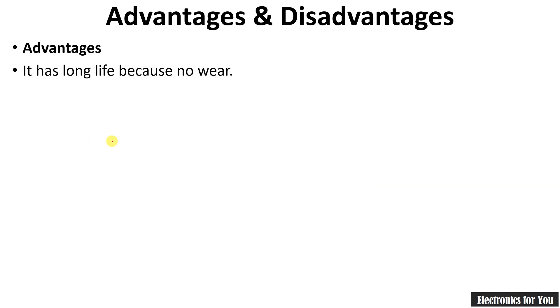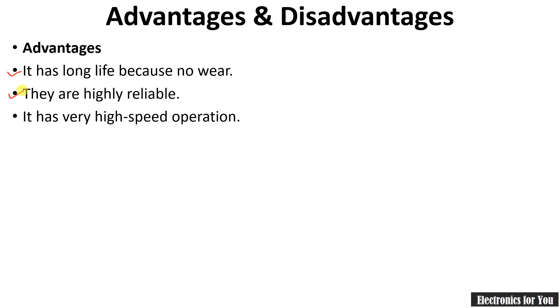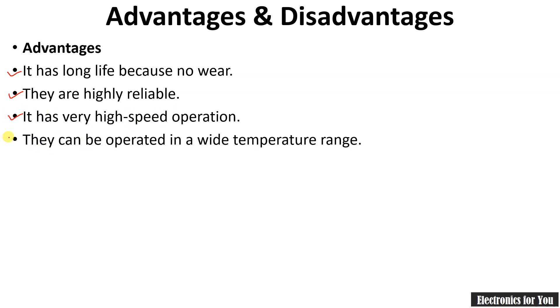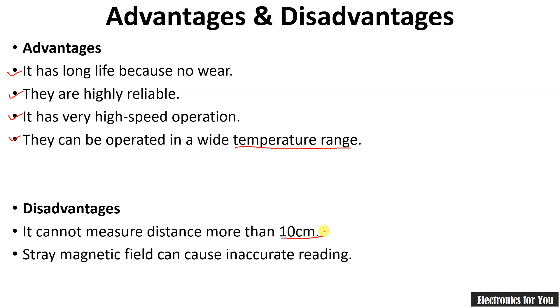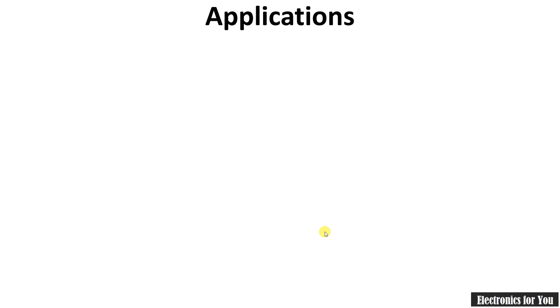Now let's look at the advantages and disadvantages of Hall Effect transducers. Advantages: it has a long life because it has no wear, it is highly reliable, it can be used for high-speed operation, and it can operate over a wide temperature range. Disadvantages: it cannot measure distances more than 10 centimeters due to magnet limitations, and stray magnetic fields can cause inaccurate readings.